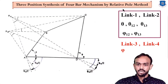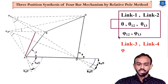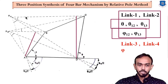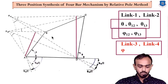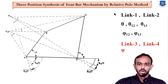The input data will be link number one and link number two, which will be given. The input angles theta one-two and theta one-three are the input angles — as link number one moves, these are the input angles. Phi one-two and phi one-three are the output angles. After using this synthesis we are going to obtain the length of link number three, link number four, and the initial output angle. These three data we will find after using the relative pole method, and it is a three-position synthesis.